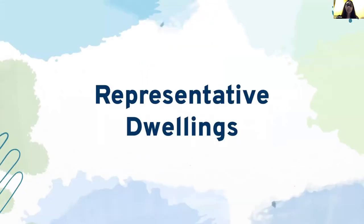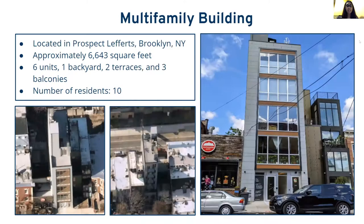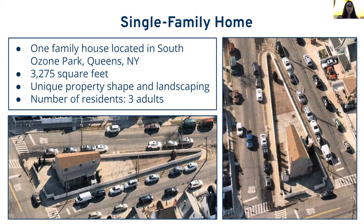The first dwelling is a two-story single-family home located in South Ozone Park, Queens, with two floors and a basement. This property is about 3,275 square feet and was selected due to its unique property shape and landscaping. The total number of occupants is three adults. The figures show two aerial images of the front and back of the property.